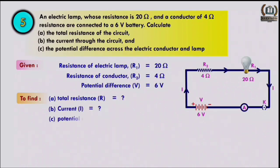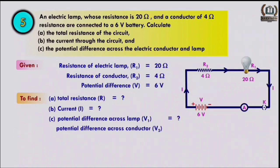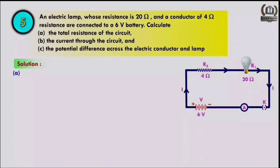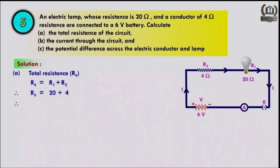We need to find total resistance R, current I, potential difference across lamp V1, and across conductor V2. The formula used is Rs = R1 + R2, and V = IR. For total resistance: Rs = 20 + 4 = 24 ohm.